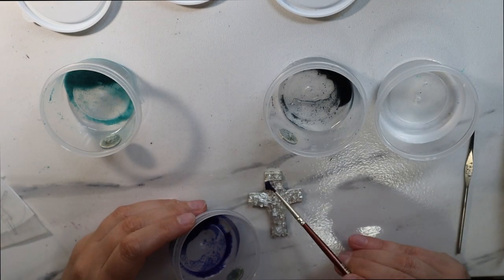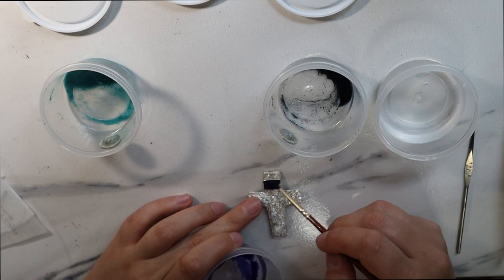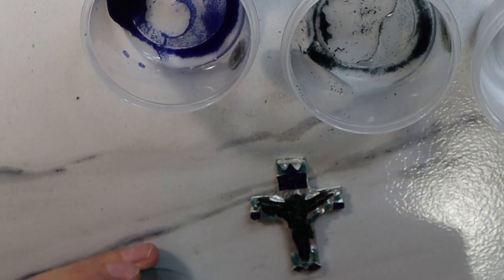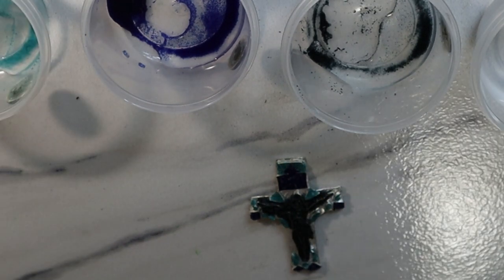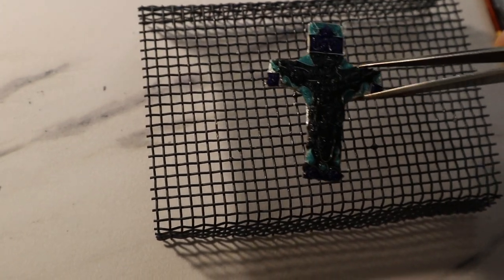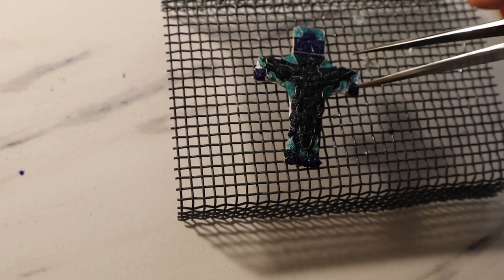Put the colors where we want. Let's fill all the empty spaces as much as possible. And first, let's dry our wet powder, and then we are ready to bake it.